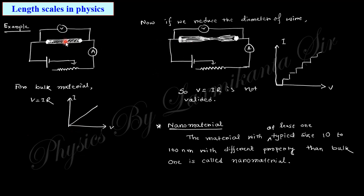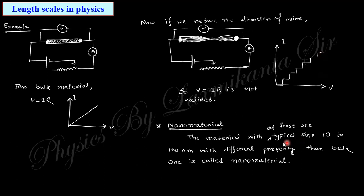Now if you reduce the length scale — that is, the diameter of this rod — to around 10 nanometer order, the current-voltage behavior changes to a step function. That means the path is so narrow that electrons cannot continuously flow; current increases in steps then remains constant. So you can see that reducing the size changes the physical property from a linear relationship to a step function — this is the nanomaterial effect.